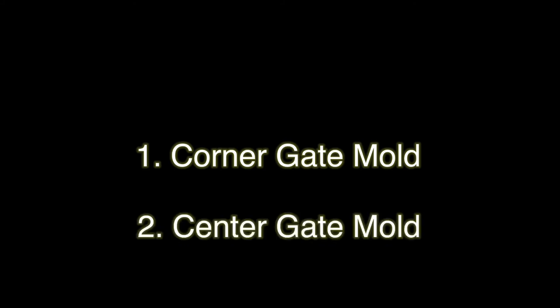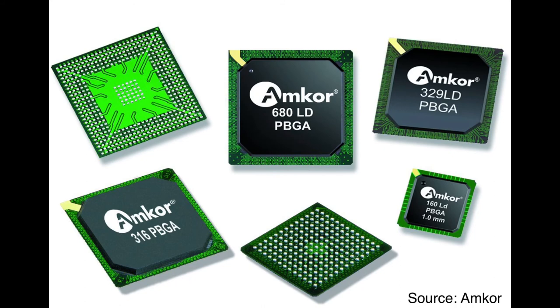There are also two major mold processes by mold chase design. One is corner gate mold and the other is center gate mold. Corner gate mold is the most popular, with simple machine structure and lower cost. As its name implies, it has the mold gate at the corner of the package, so liquid state mold compound fills the mold chase from its corner. If you have a package with long wires, the wires can be swept and touch each other, causing an electrical short. In that case, we cannot use corner gate mold and need to use center gate mold.